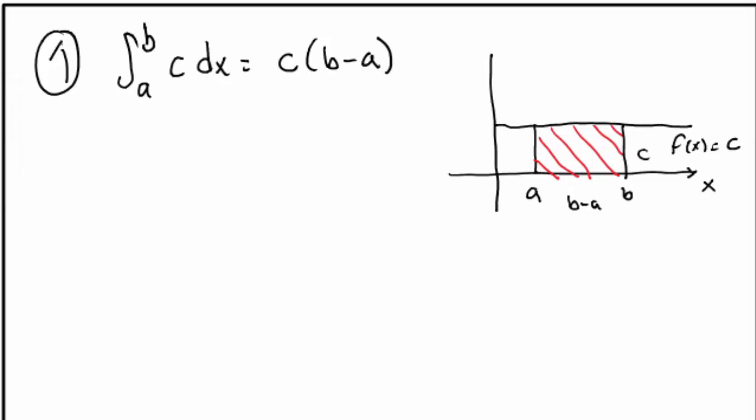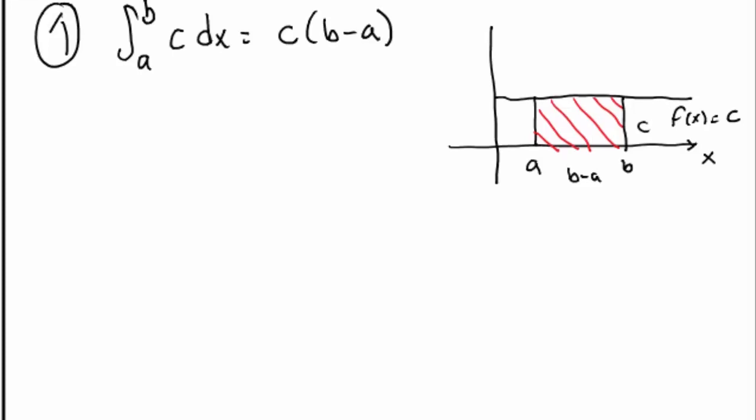You can see that this formula will give you the right answer even if c is negative. If c is negative, the graph of the function is a horizontal line below the x-axis. And in this case we should count the area as negative and the negative value is precisely what we will get when c is negative.